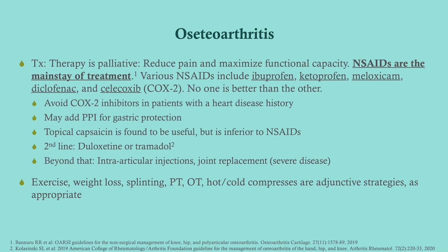The mainstay of treatment is NSAIDs — no one NSAID is necessarily better than another. However, many of these patients will have cautions for long-term NSAID use: reflux disease, gastritis, or congestive heart failure, as NSAIDs taken long-term can be hard on those organs. Avoid COX-2 inhibitors in patients with a history of heart disease. You can add omeprazole for gastric protection with long-term NSAIDs. Topical capsaicin may be useful but is inferior to NSAIDs. Second-line options include duloxetine or tramadol, then intra-articular injections, and finally joint replacement.